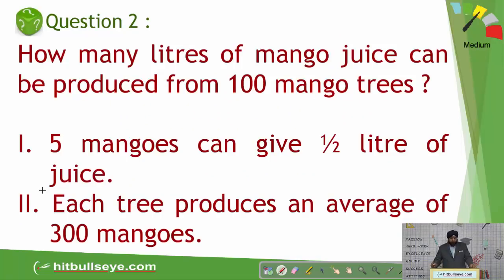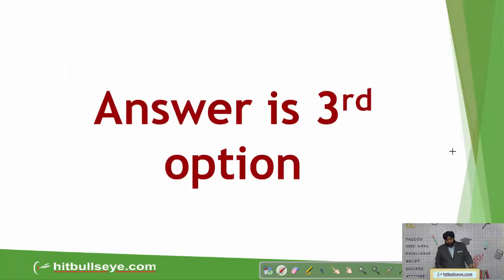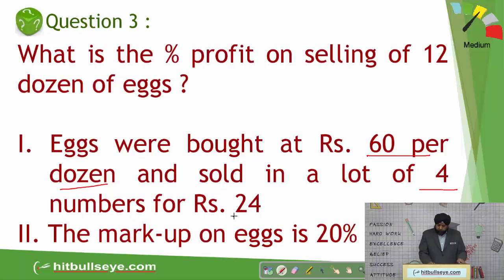Second question: how many liters of mango juice can be produced from 100 mango trees? Statement A says five mangoes can give half a liter of juice — A alone is not sufficient. Statement B says each tree produces an average of 300 mangoes — this alone is also not sufficient. Combining both gives sufficient information, so option three is the answer. Third question: what percent profit on selling 12 dozen eggs? Statement A says eggs are bought at 60 per dozen, so the cost price of one egg is five rupees, and selling price is four for 24, giving six rupees. So SP and CP are both available and you can find the percentage profit — A alone is sufficient.